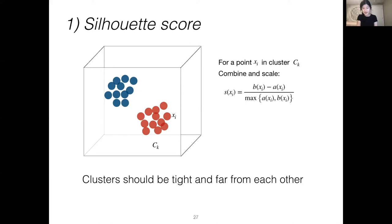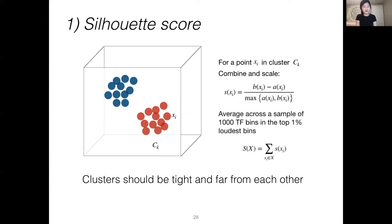The intra-cluster distance A(x) measures tightness within clusters, so we want it to be low. The inter-cluster distance B(x) measures distance between clusters, so we want it to be high. To combine them, we subtract A(x) from B(x) and scale by the maximum of the two values, so that the silhouette score S(x) always ranges between negative one and one. Since computing this for every TF bin is intractable, we sample 1000 points from the loudest one percent of TF bins, as louder bins are more perceptually important. We take the mean silhouette score across these 1000 points to estimate S(X) for the entire mixture.